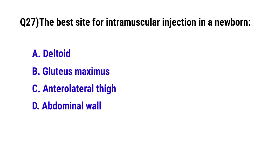Question No. 27: The best site for intramuscular injection in a newborn is? The correct option is C: Anterolateral thigh.